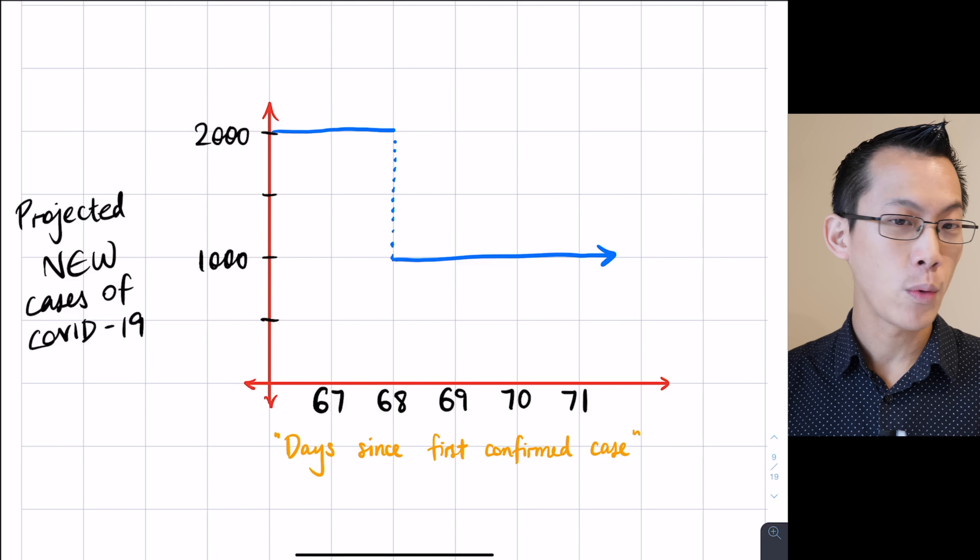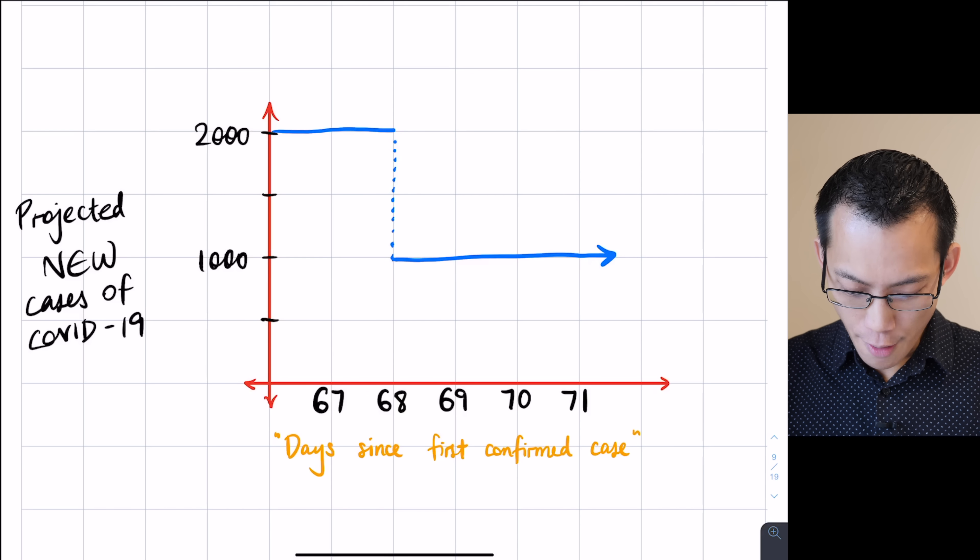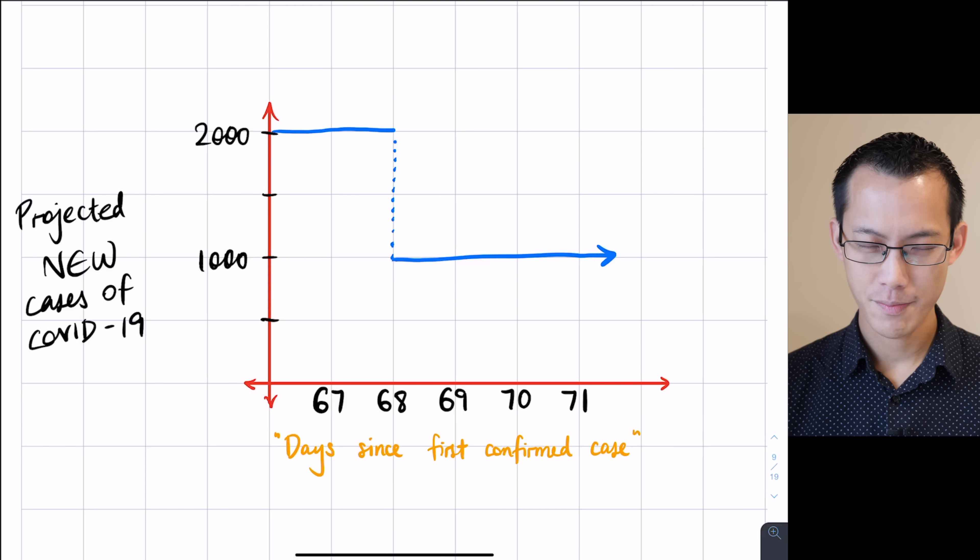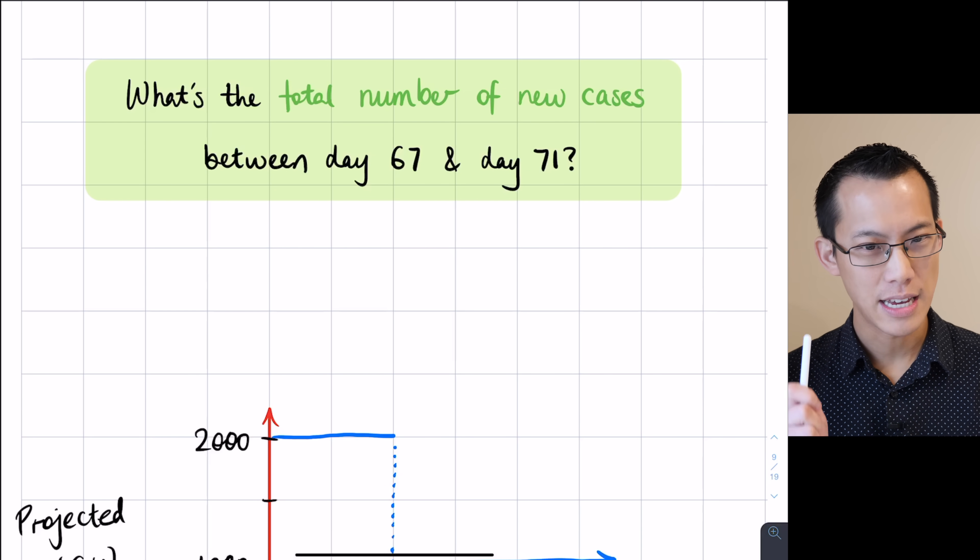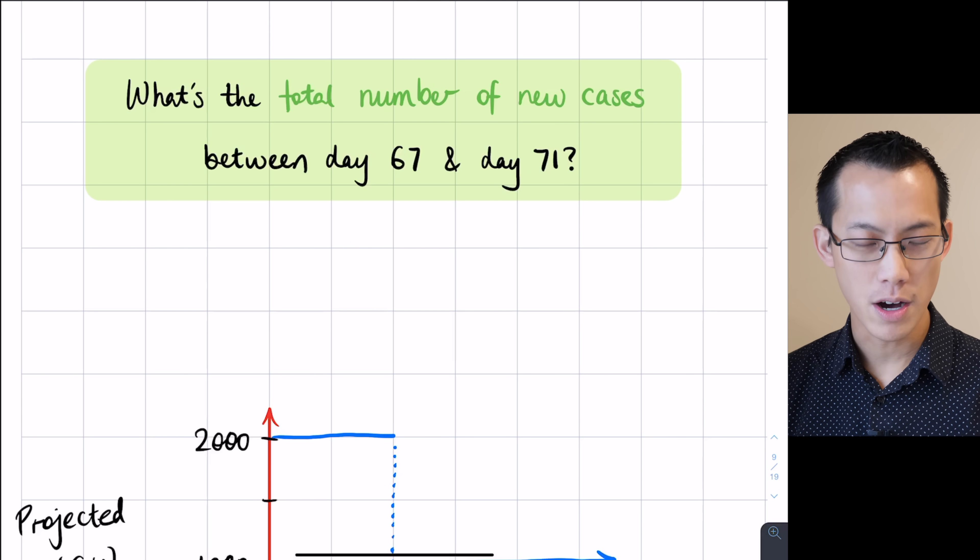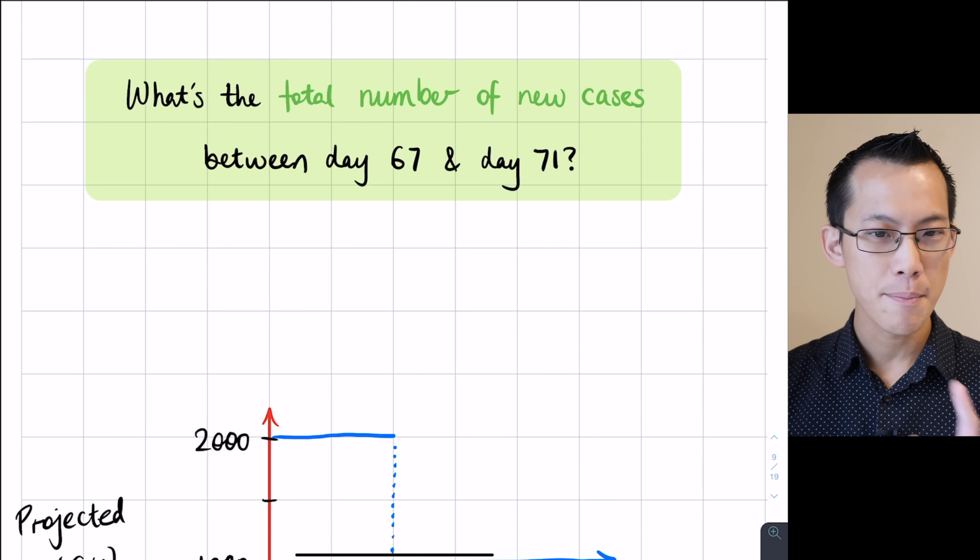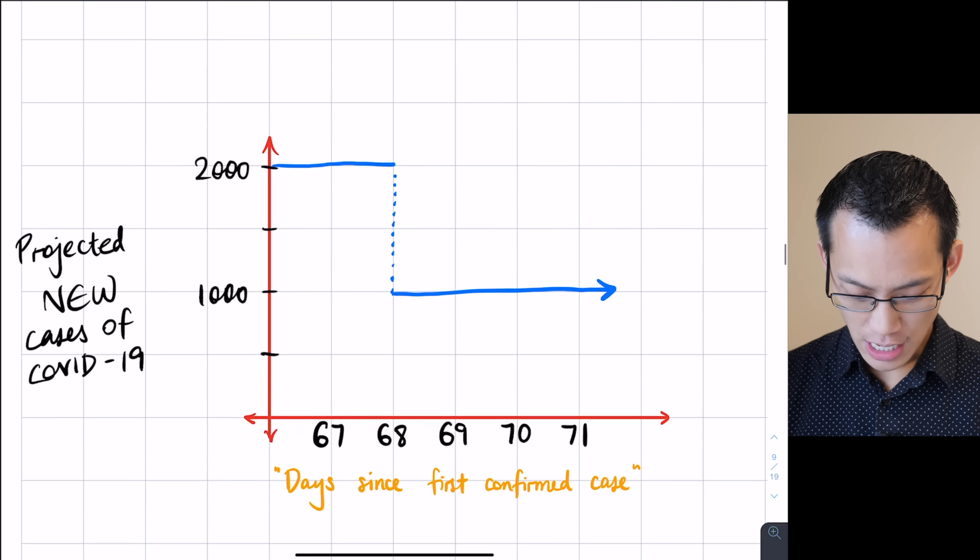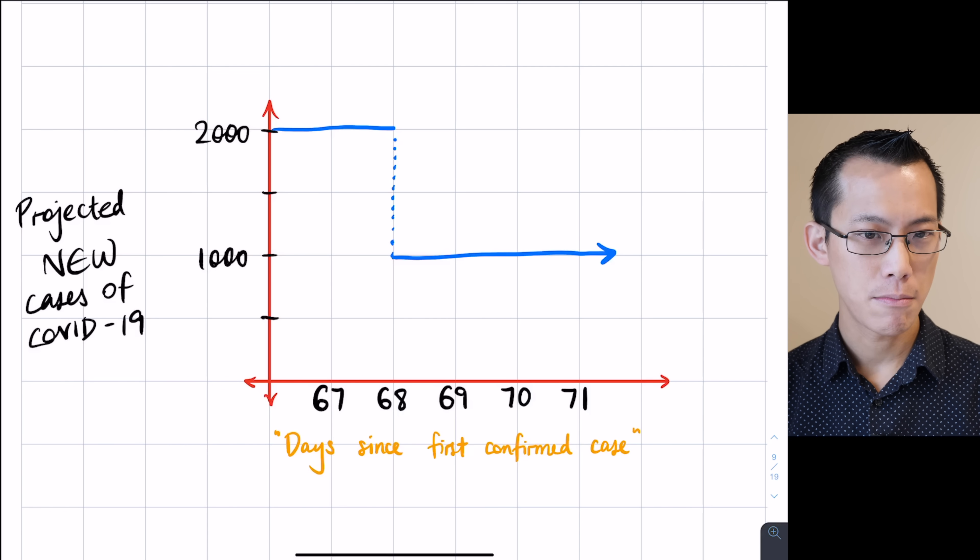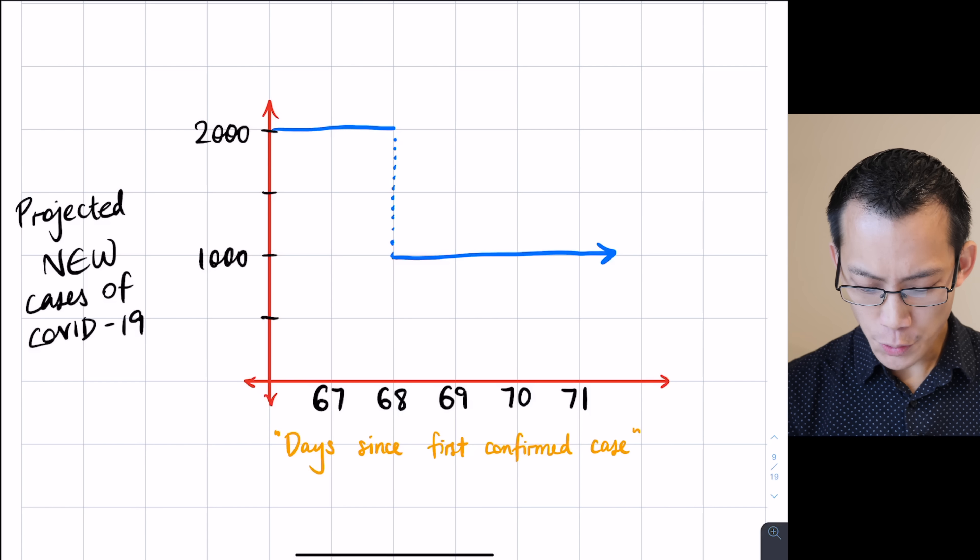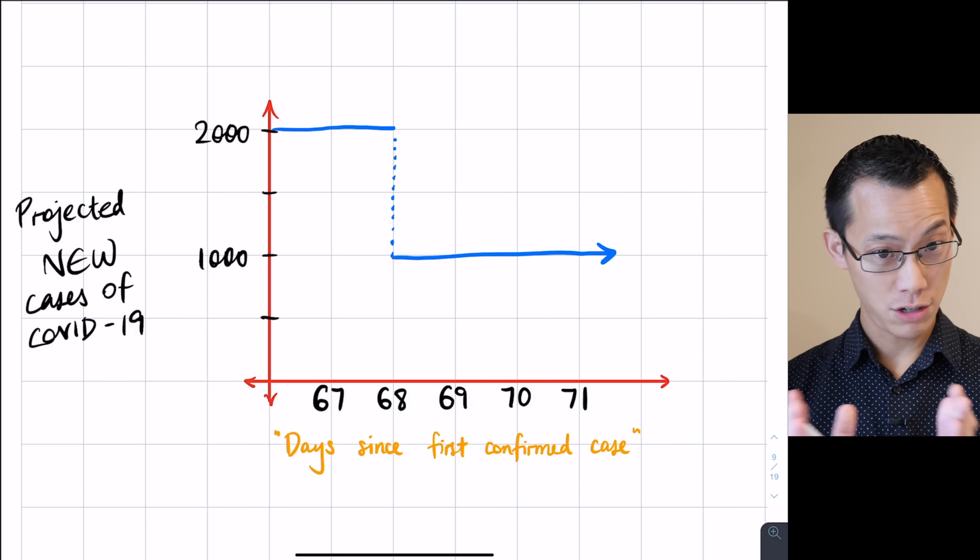But this thing's weird, it's sort of broken into pieces but we can still understand it and importantly we can still answer that original question from this different perspective of a derivative. And let me just repeat that again. We're going to go back to this original question. What's the total number of new cases between day 67 and day 71? We can answer that same question on the basis of this new graph. Just imagine, just forget about that earlier graph that we did before. Suppose this was the only graph that was presented to you. How would you work out that same number?